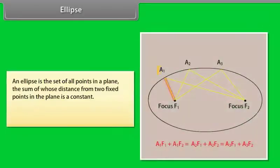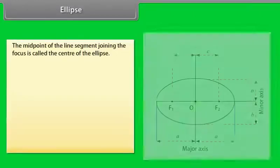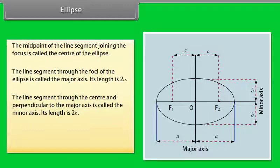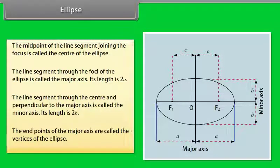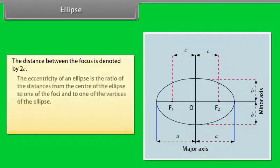Ellipse. An ellipse is the set of all points in a plane, the sum of whose distances from two fixed points in the plane is a constant. The two fixed points are called the foci of the ellipse. The midpoint of the line segment joining the foci is called the center of the ellipse. The line segment through the foci is called the major axis; its length is 2a. The line segment through the center and perpendicular to the major axis is called the minor axis; its length is 2b. The end points of the major axis are called the vertices. The distance between the foci is denoted by 2c. The eccentricity is e = c/a.